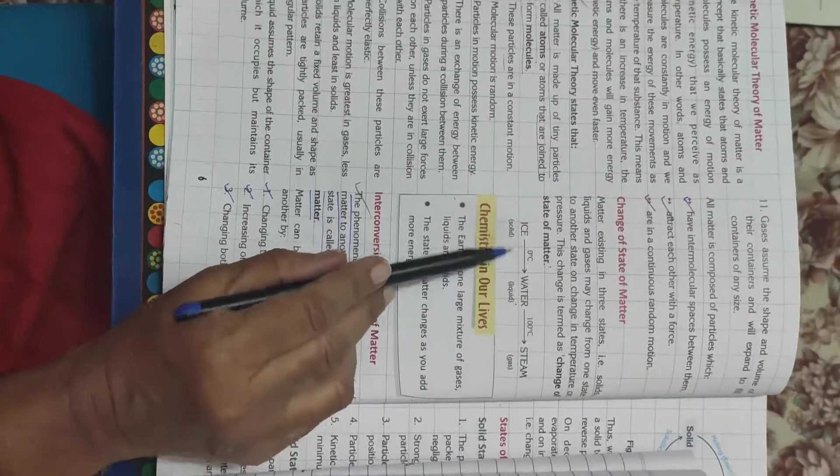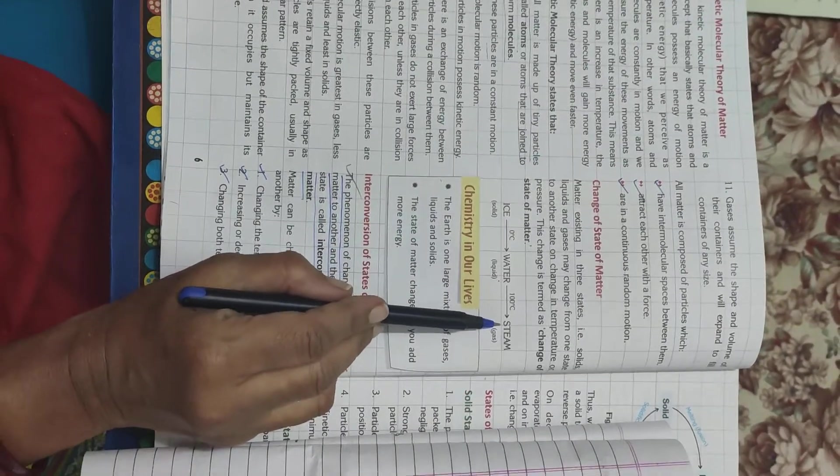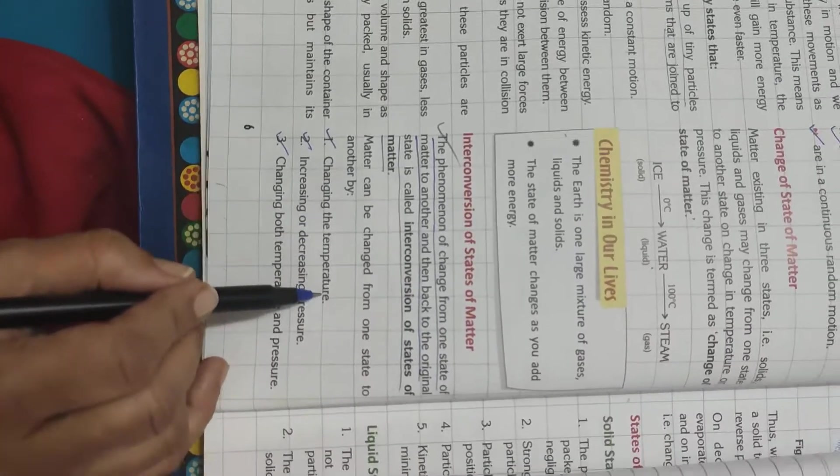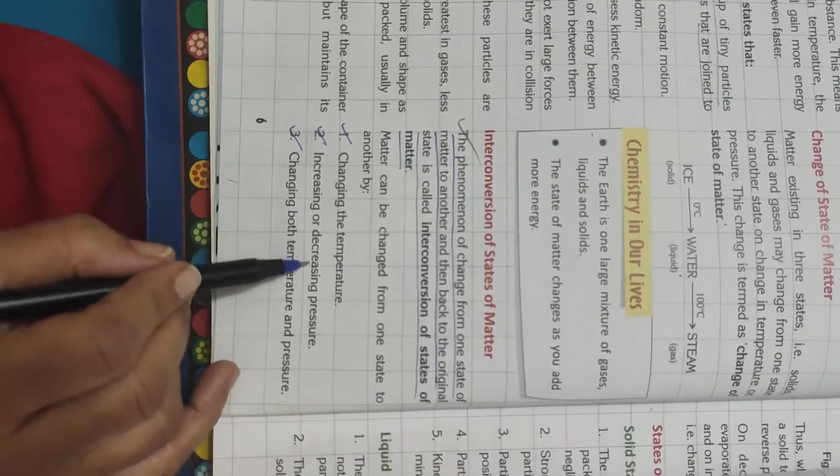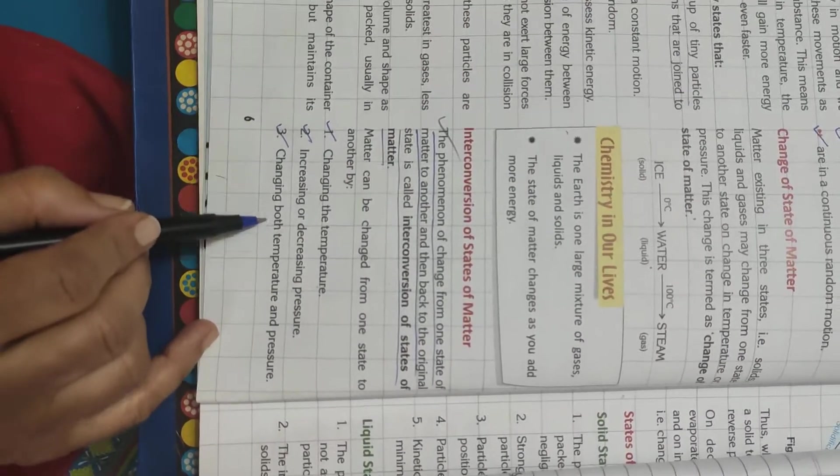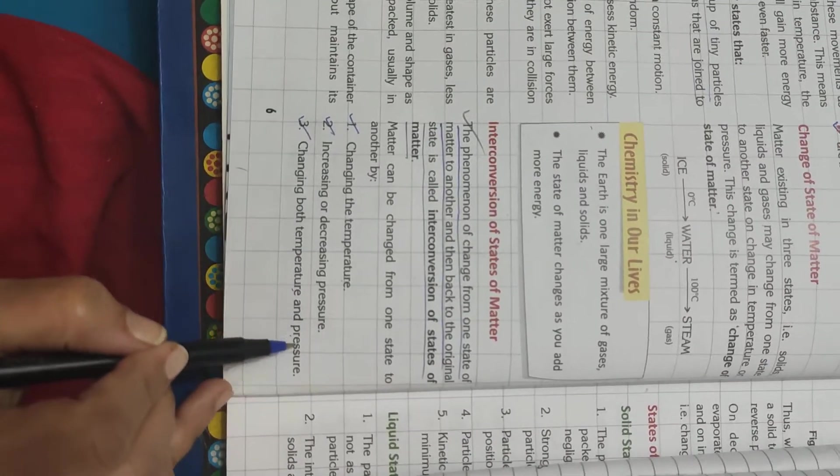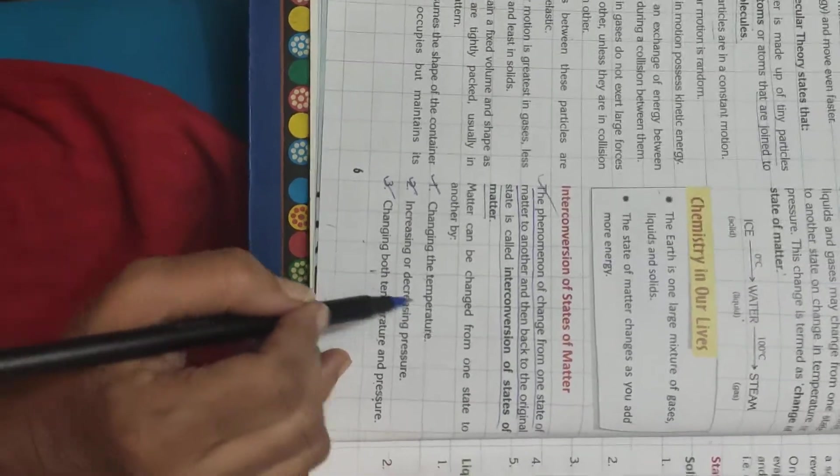But something must be applied to it for the change. And that is possible only when there is change in temperature, increase or decrease in pressure, or changing both temperature and pressure. These three things can only change the state of matter.